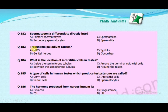Treponema pallidum causes: AIDS, genital herpes, syphilis, or gonorrhea? The correct answer is syphilis. Syphilis is a disease caused by Treponema pallidum, which is a bacterium called spirochete bacteria.